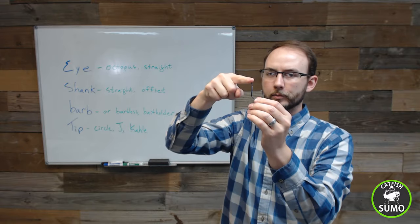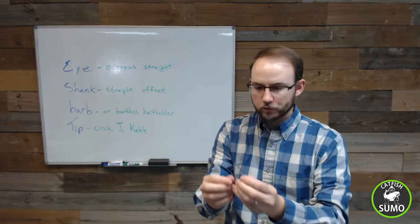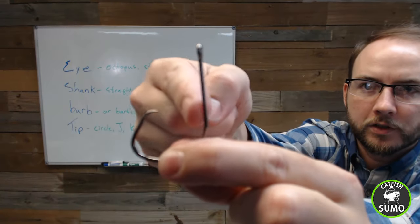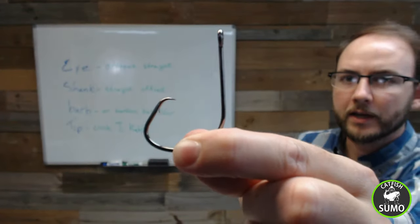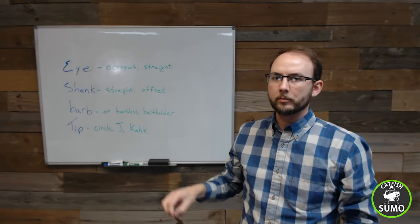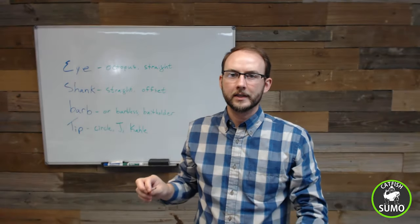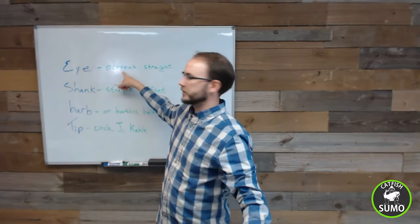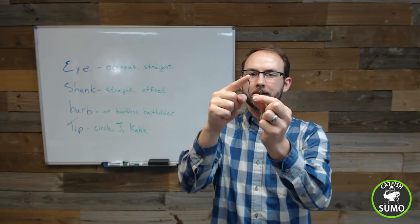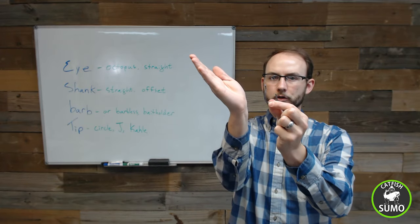Or there's a straight eye, which looks like this up top, which is just coming straight up, straight up the shank. And the eye is directly straight there. So this is probably one of the most common terms that gets mixed up is this octopus word. The word octopus refers to whether or not that eye is tilted backwards or not.